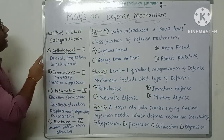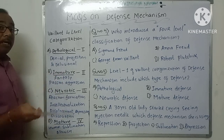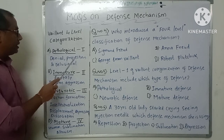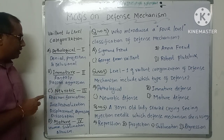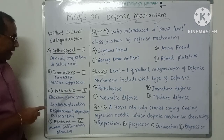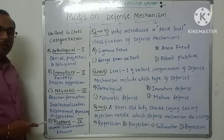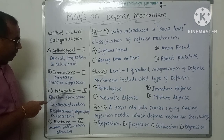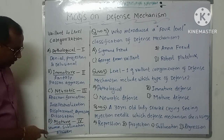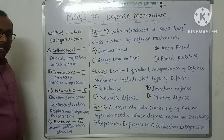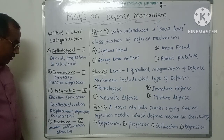Vaillant classified four levels of defense mechanisms. Level one is pathological, which includes denial, rejection, and delusion — delusion being a false fixed belief. Level two is immature defense mechanisms, which includes fantasy and partial creations. Level three is neurotic defense mechanisms, which includes reaction formation, intellectualization, displacement, repression, and dissociation. Level four is mature defense mechanisms, which includes humor, sublimation, and altruism. Altruism refers to constructive service that gives satisfaction to a person.